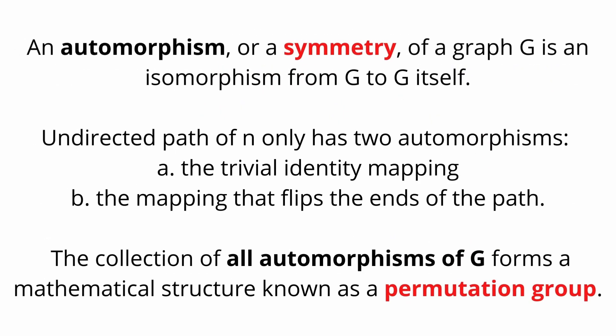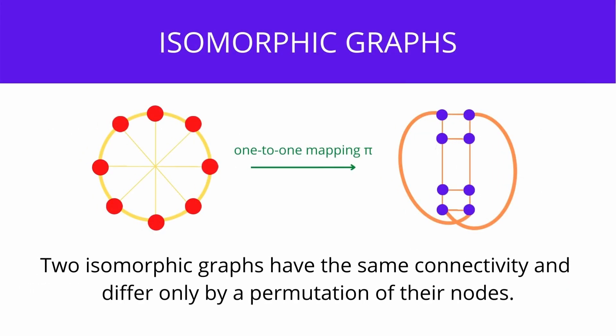An automorphism, or symmetry, of a graph G is an isomorphism from G to G itself. The collection of all automorphisms of G form a mathematical group — a permutation group. We combine graph symmetry and group dynamics.